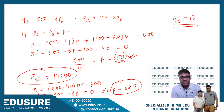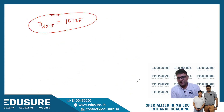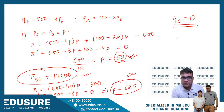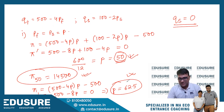Profit at p equals 50 was 14,500; profit at p equals 62.5 is 15,125. So the answer to the first case is that the common price charged will be 62.5, at which students will choose to purchase nothing and only faculty will watch movies.